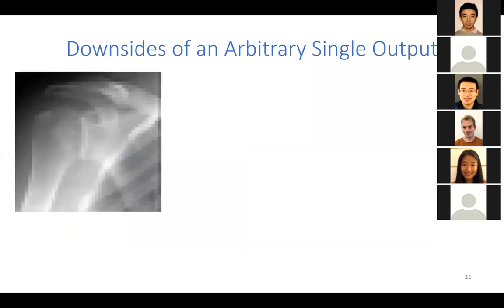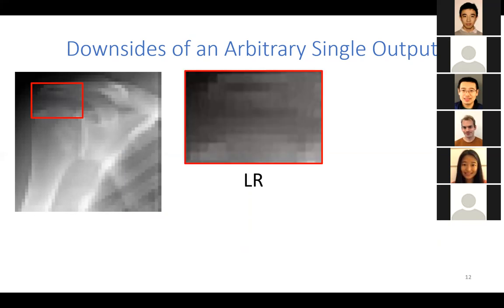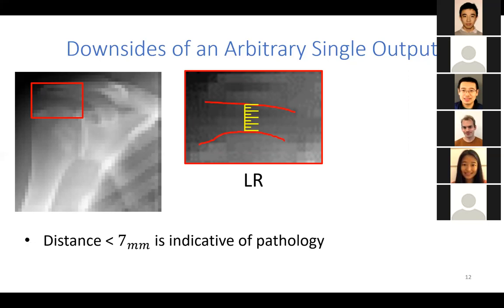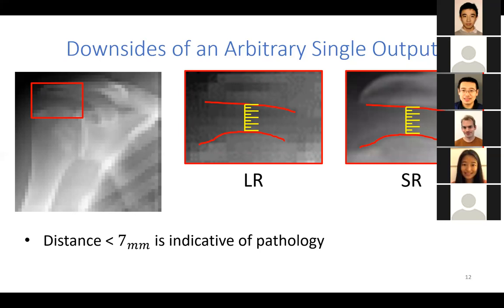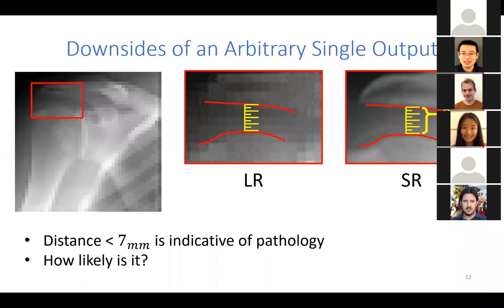The last example is from the medical domain. We have a low-resolution X-ray of the shoulder area and are interested in a specific pathology characterized by the distance between two bones being smaller than seven millimeters — if it is, the pathology exists. We use EDSR-GAN to super-resolve the image and measure eight millimeters, but we cannot say whether this is the only option. Perhaps there are other possible solutions that do indicate pathology. Using existing methods, we cannot answer these questions.